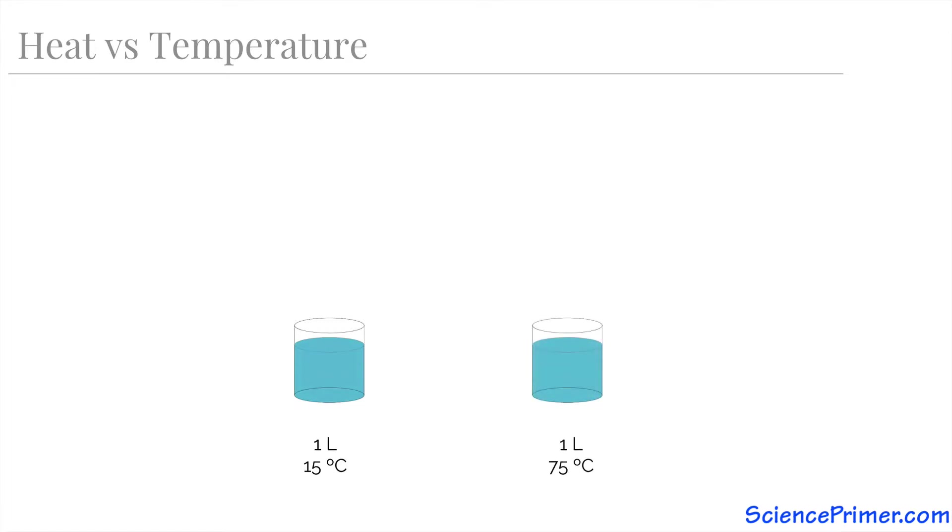Now consider another liter container of water. This one has the same amount of water in it, but this one has a temperature of 75 degrees. These temperatures describe the average kinetic energy of the molecules in the containers, and in this case, the water in the second container is at a higher temperature and contains a larger amount of total energy as heat.